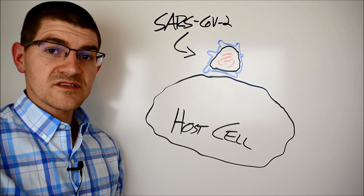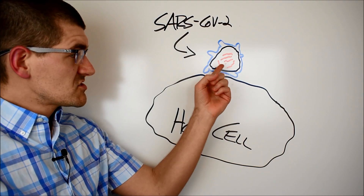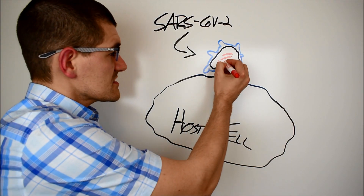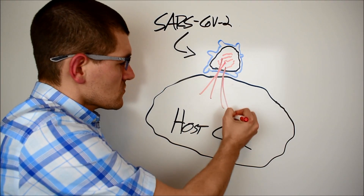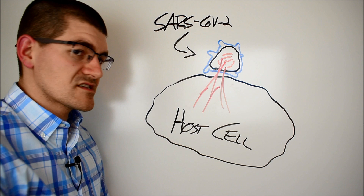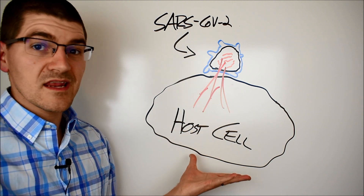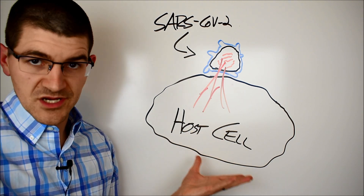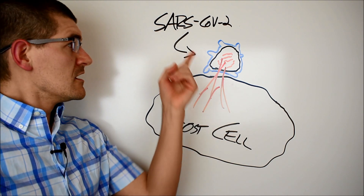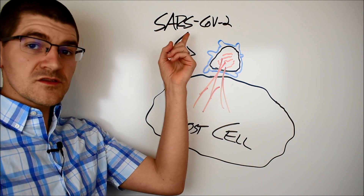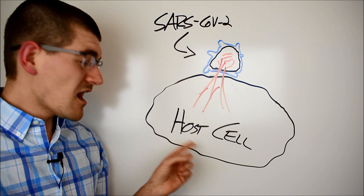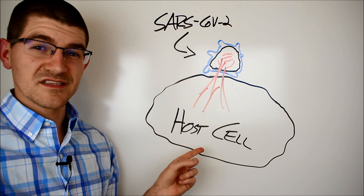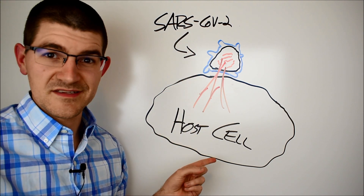Once the virus is attached, the genetic material inside just splurts into the host cell and is replicated by the host cell's cellular machinery. For SARS-CoV-2, this occurs predominantly in the host cell's cytoplasm.